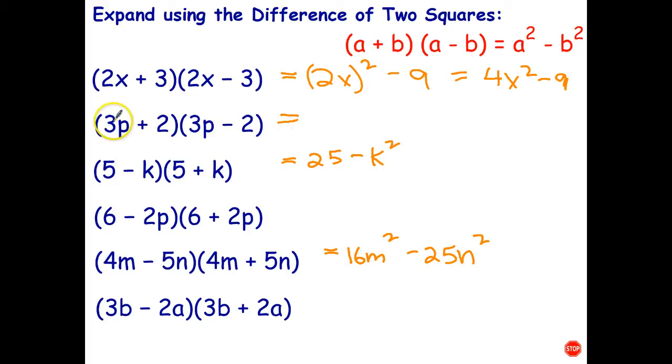Let's see how you went on those. So 3p times 3p is 9p squared. And 2 times 2 is 4. So a plus b times a minus b equals a squared minus b squared. Next one. a is 6, b is 2p. 6 squared is 36 minus 2p times 2p is 4p squared. And the last one. a is 3b, b is 2a. So even though we're using the same letters, it doesn't really matter. Just think of that as being a. So 3b squared is 9b squared minus and 2a squared is 4a squared.